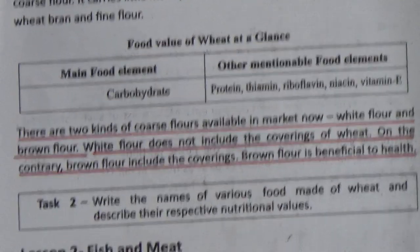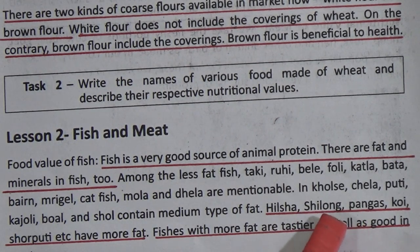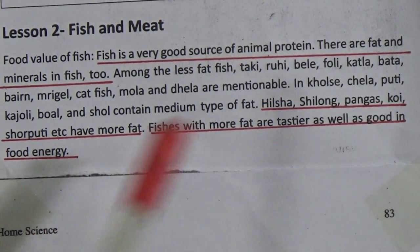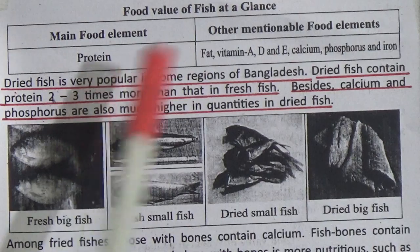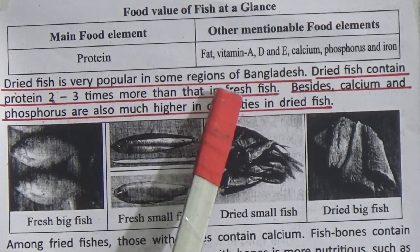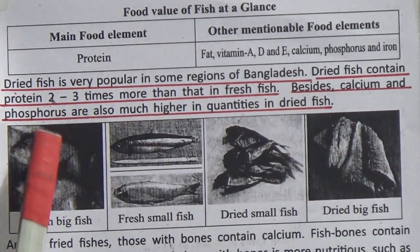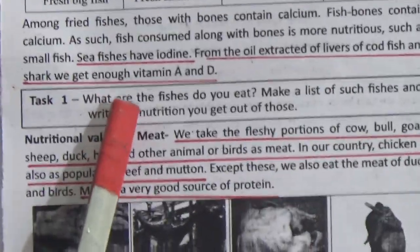Relation 2: fish and meat. Food value of fish. Fish is a very good source of animal protein. There are fat and minerals in fish too. Hilsa, shing, pangash, koi, and shoyputi have more fat. Fishes with more fat are tastier as well as good in food energy. Food value of fish at a glance — main food value is protein; other mentionable elements are fat, vitamin A, D and E, calcium, phosphorus, and iron. Dried fish contains protein 2 to 3 times more than fresh fish; calcium and phosphorus are also much higher in dried fish. Sea fishes have iodine, and from the oil extracted from livers of codfish and shark we get enough vitamin A and D.